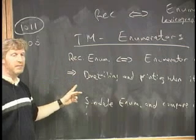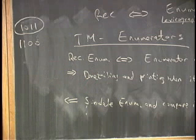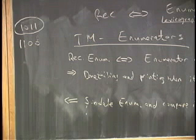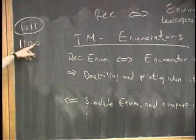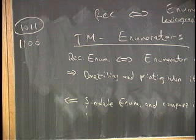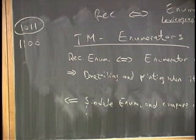If something's not recursively enumerable, there's no enumerator for it. What about a recursive set where 1100 is the last string it accepts — a decidable set that accepts finitely many strings? If you have a lexicographic enumerator and 1100 doesn't show up on the tape, you'll never know whether it should be in the set or not because your enumerator runs forever without printing it out. This issue arises specifically if the set happens to be finite.